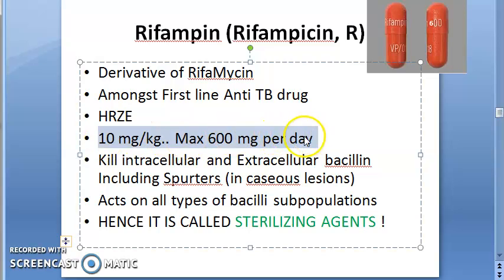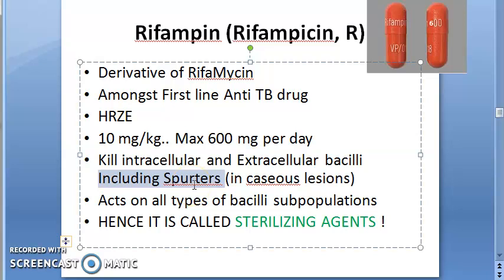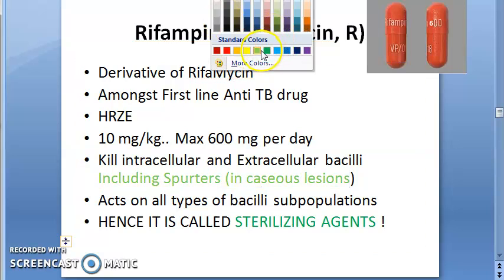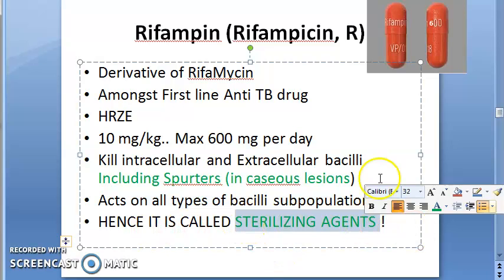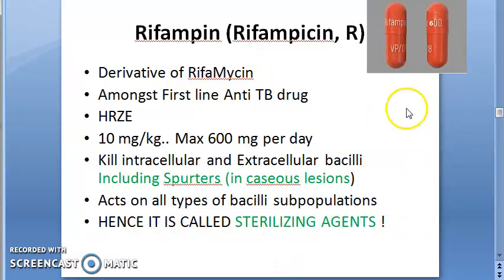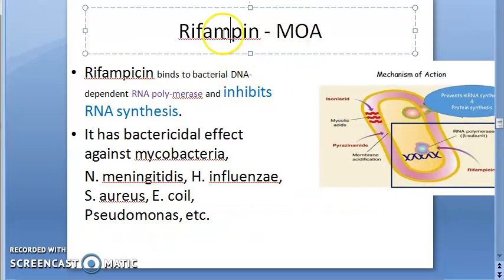Rifampin kills both intracellular and extracellular bacilli, just like Isoniazid. It also kills bacteria trapped inside caseous lesions. Because it acts on all types of bacilli subpopulations, Rifampin is called a sterilizing agent — it is really effective.